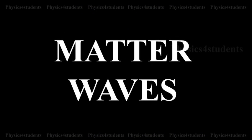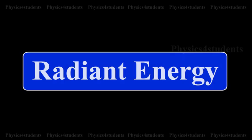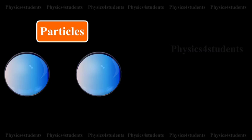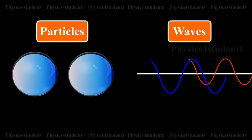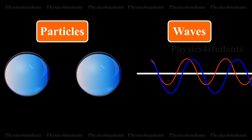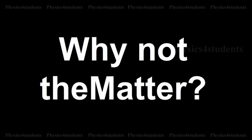Matter Waves. The radiant energy has dual aspects of particle and wave, hence a natural question arises. If radiation has a dual nature, why not the matter?